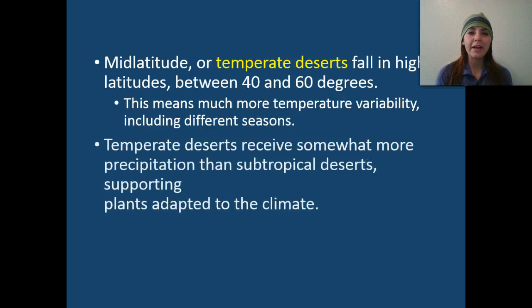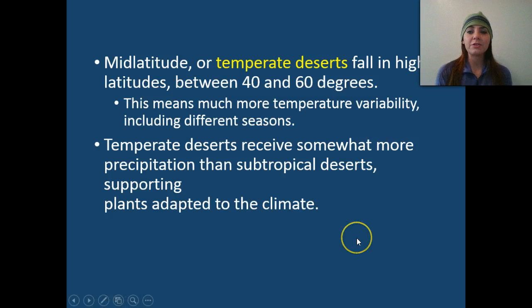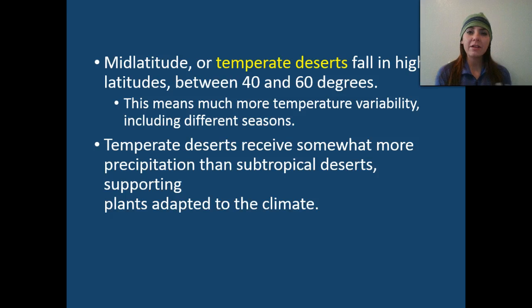At mid-latitudes we get our temperate deserts, which fall in higher latitudes — about 40 to 60 degrees. This means they have much more temperature variability and actually get seasons. Temperate deserts receive somewhat more precipitation than subtropical deserts, and this helps them support more plant life, which in turn supports more animal life.